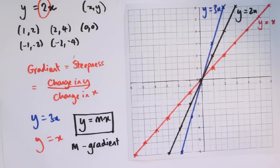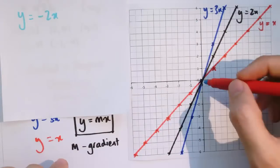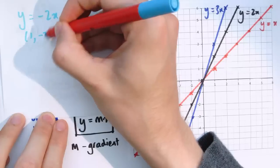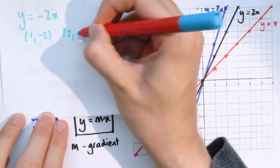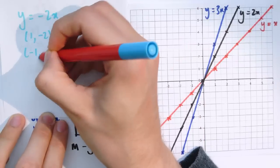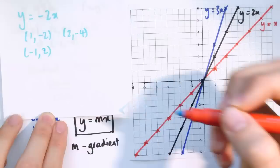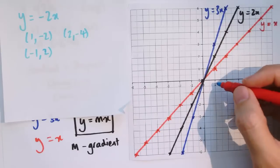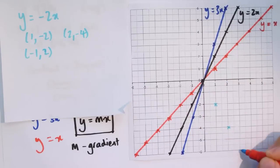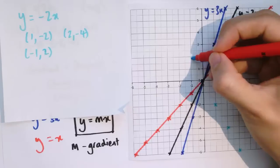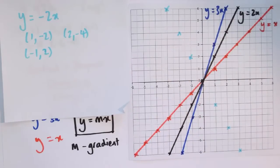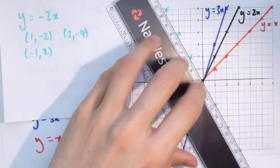The gradient doesn't have to be positive — it could be negative. So we could have y equals minus 2x, which still goes through 0, 0. But now if x equals 1, y equals minus 2; x equals 2, y equals minus 4; x equals minus 1, y equals plus 2. So the graph goes through the points 1, minus 2; 2, minus 4; 3, minus 6 and so on. If the gradient is negative, every time x increases, y decreases.